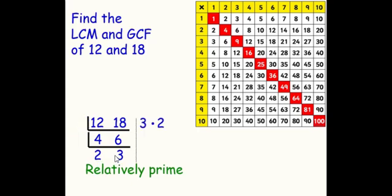3 times 2 is our GCF, which is 6. And then 3 times 12, as well as 2 times 18, is 36. 36 is the LCM.